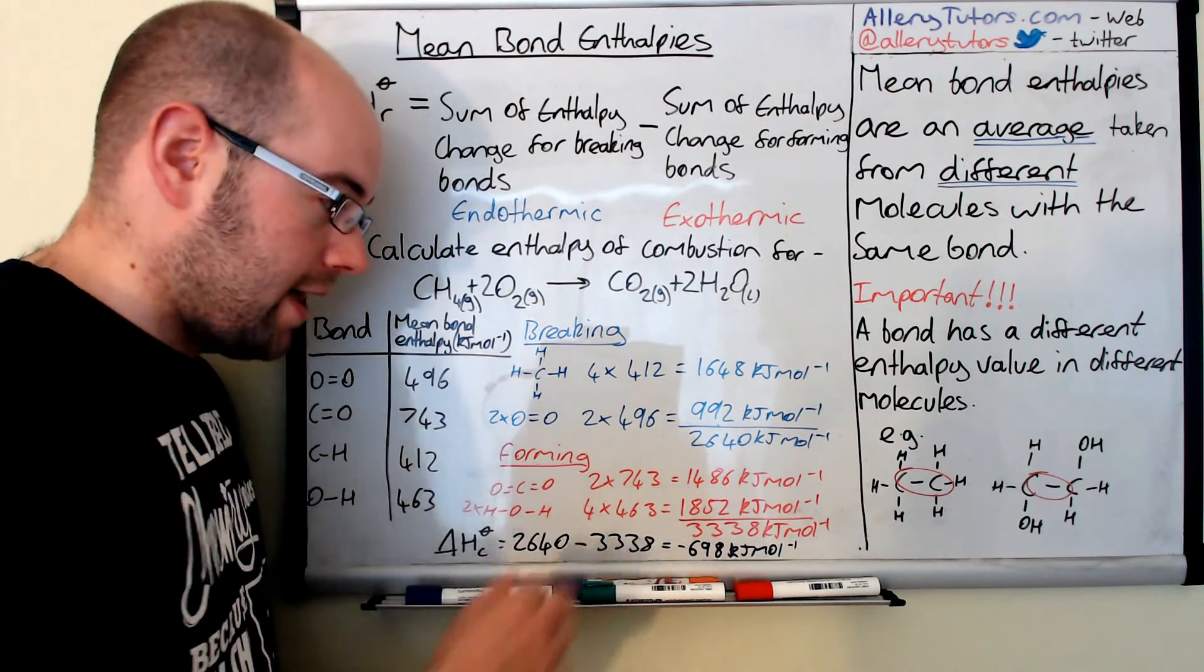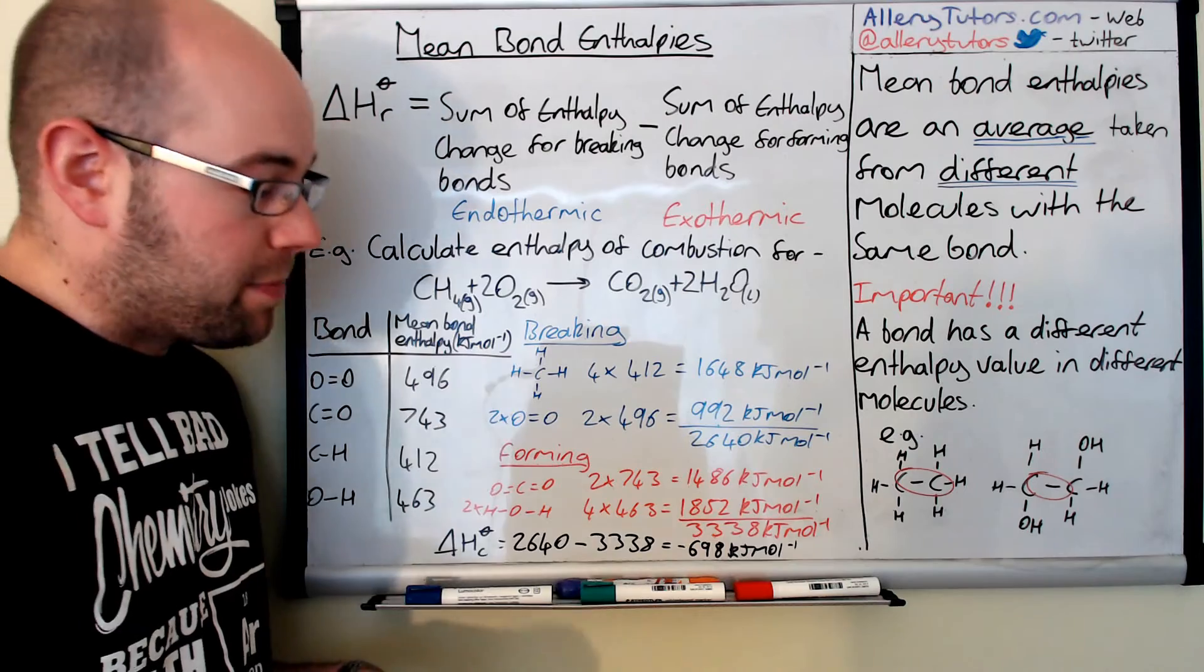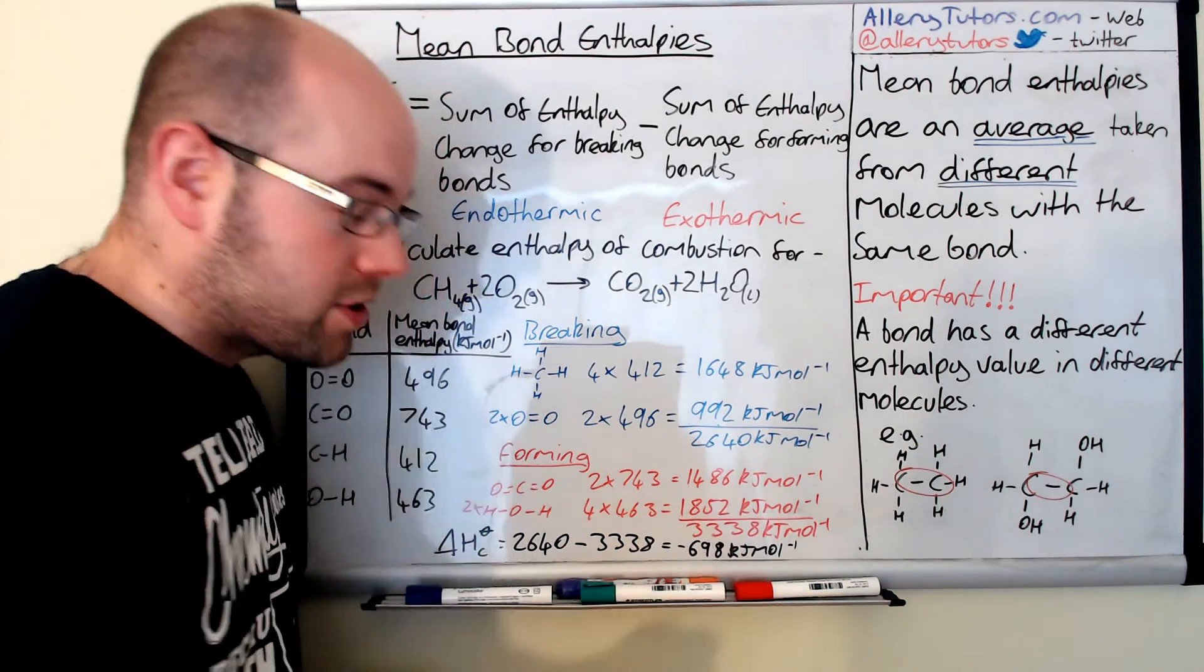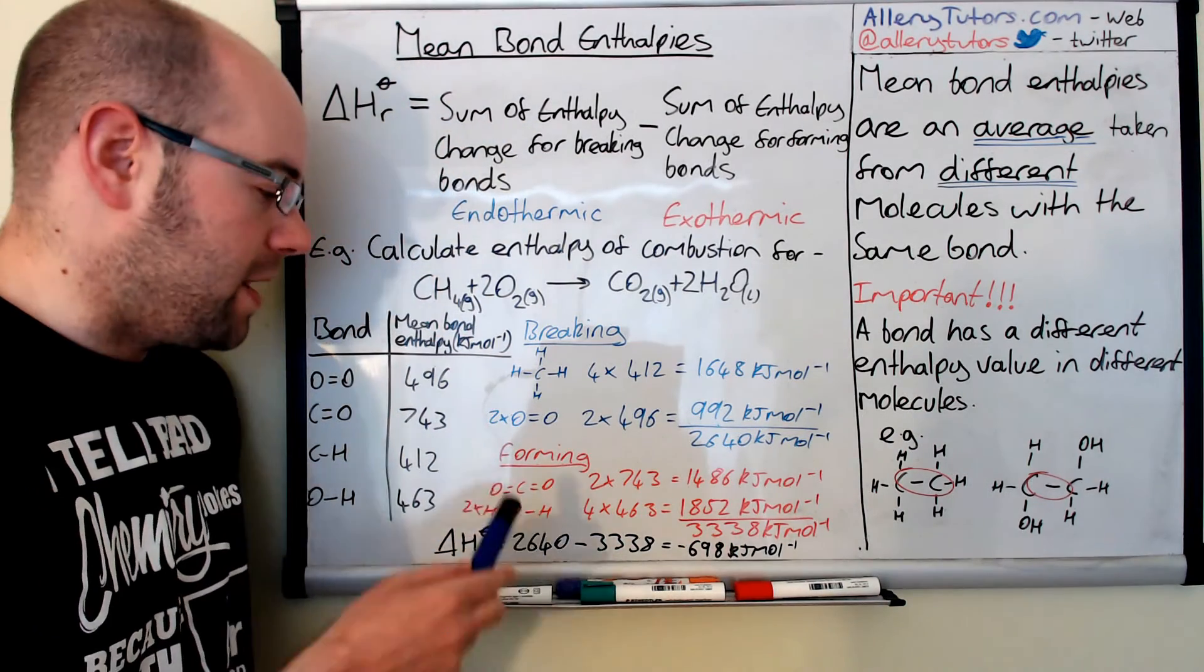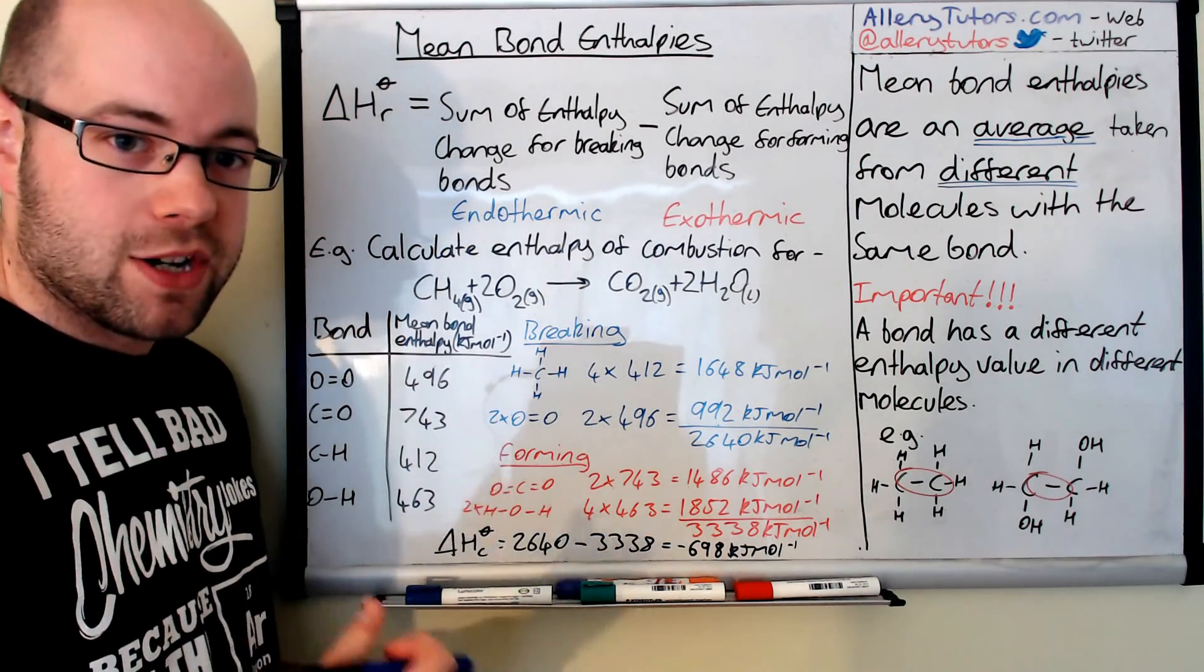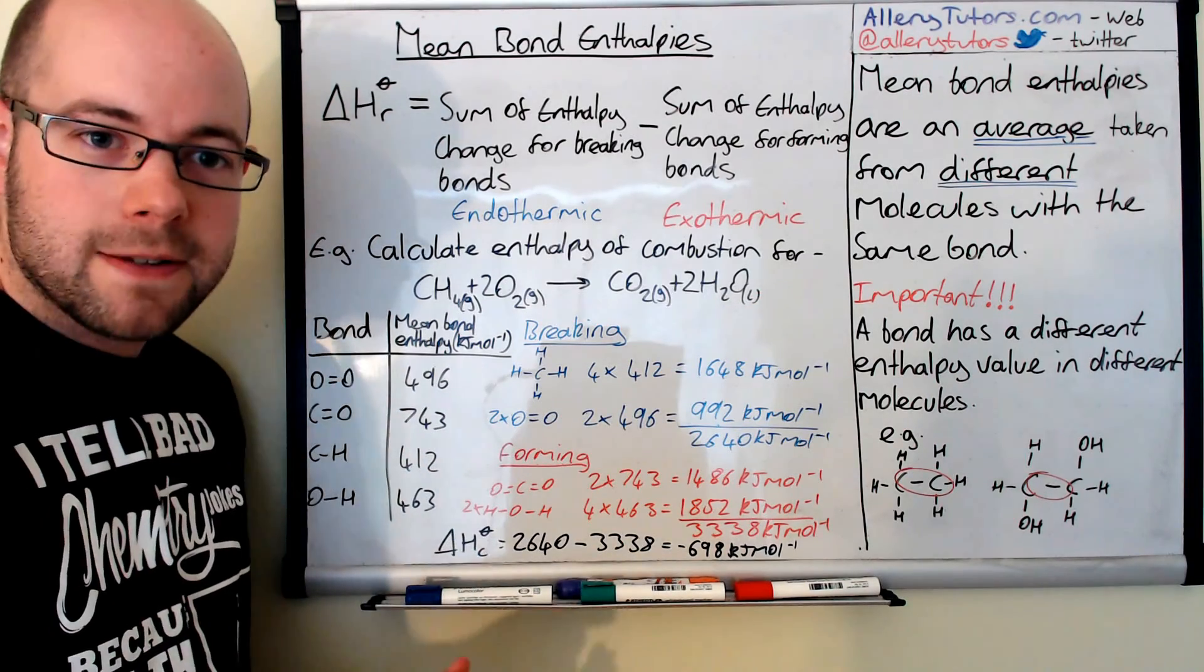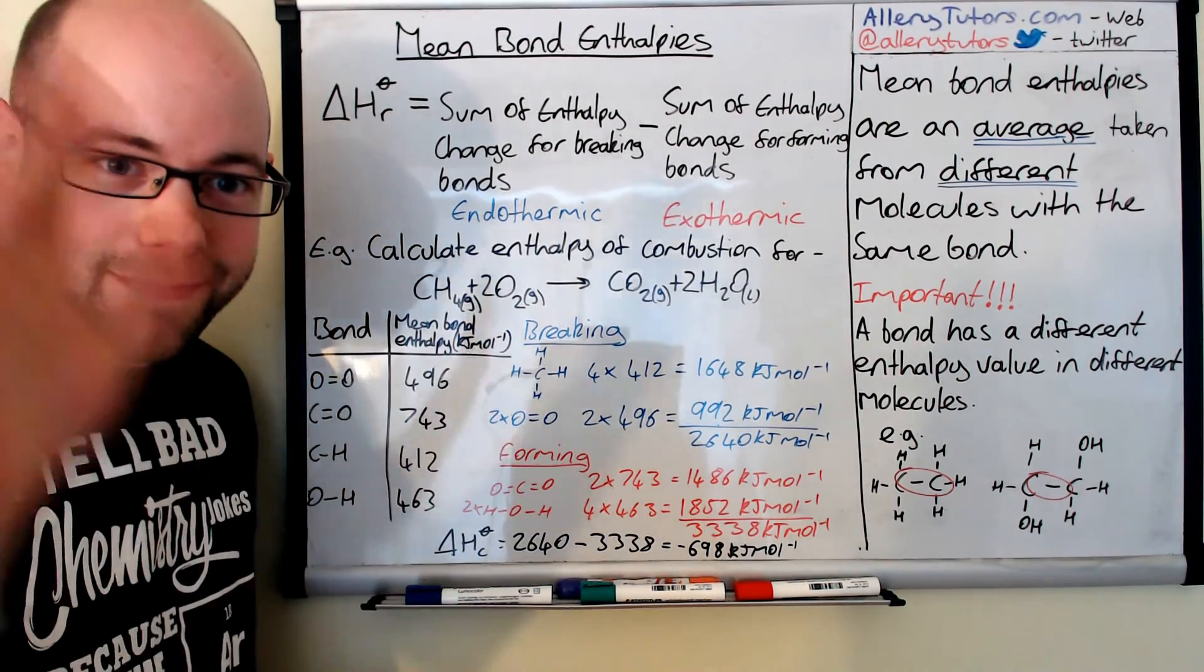You actually get a mark for adding up your breaking, adding up your forming, and then working out your final value as well. But again, I emphasize, this number is only a mean value. It is not the actual value. So when you actually do this reaction and you measure the enthalpy change, it might be different to that number. So that's it. Hope that helps. Bye bye.